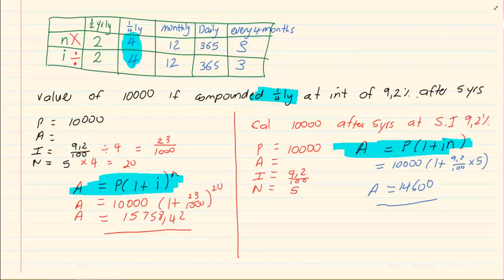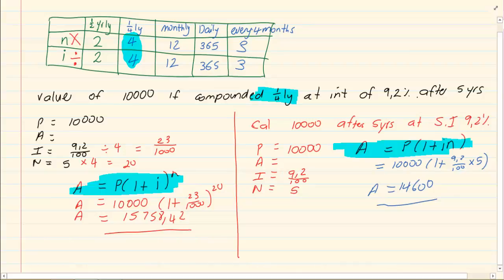You are aware of the two different formulas. You are aware that with compound interest we have an adjustment whereas with simple interest we do not have an adjustment. Then we have effective interest.